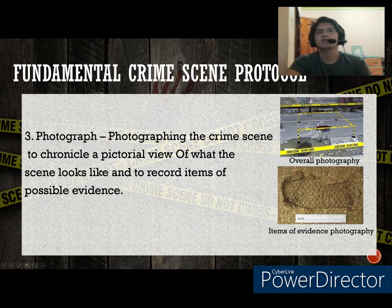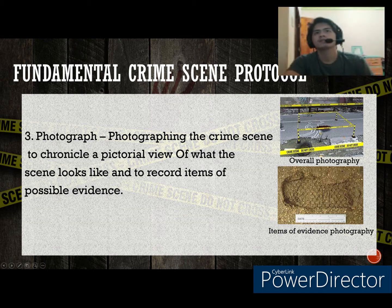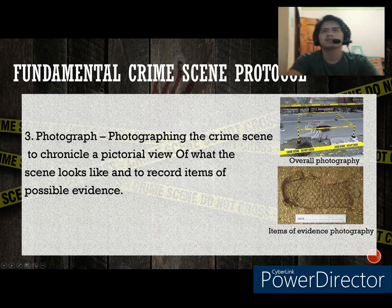Crime scene photographs are generally taken in two categories. The first is overall view — as you can see in the picture, that is the overall photography. Overall view captures the global aspects of the crime scene. The purpose is to show exactly where the scene was and to show all boundaries of the scene. It is photographed from a long distance or at a wide angle.